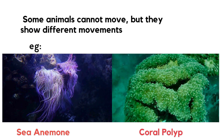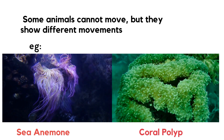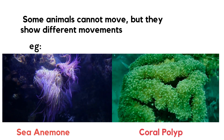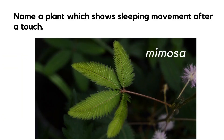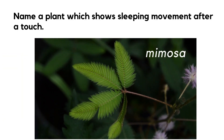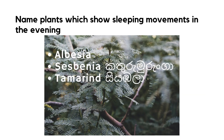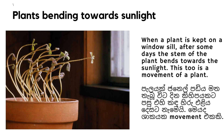Some animals cannot move from one place to another, but they show different movements. Sea anemone and coral polyps, who live in the sea, show such types of movements. A plant which shows sleeping movement after it is touched is mimosa. Plants which show sleeping movements in the evening are albizia, Cassia baynea, and tamarind. When a plant is kept on a windowsill, after some days the stem of the plant bends towards the sunlight — this too is a movement of a plant.